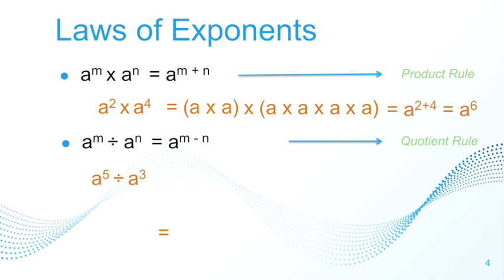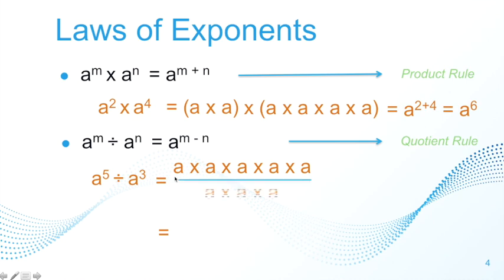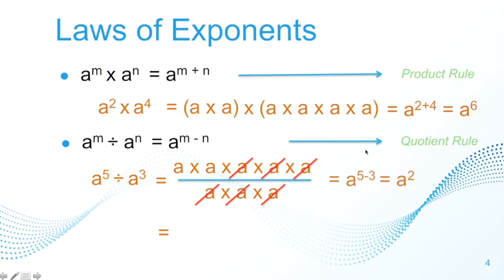Let's use the definition to illustrate. Take a to the power of 5 divided by a cubed. A to the power of 5 is a times a times a times a times a, and a cubed is a times a times a. You can rewrite the division as a fraction and cancel the common factors — one pair of a's, another pair, and another pair — leaving a times a, or a squared. The exponent 2 comes from subtracting 3 from 5. Since the operation is division, the denominator cannot be zero, so this quotient rule is applicable only if a is not equal to zero.